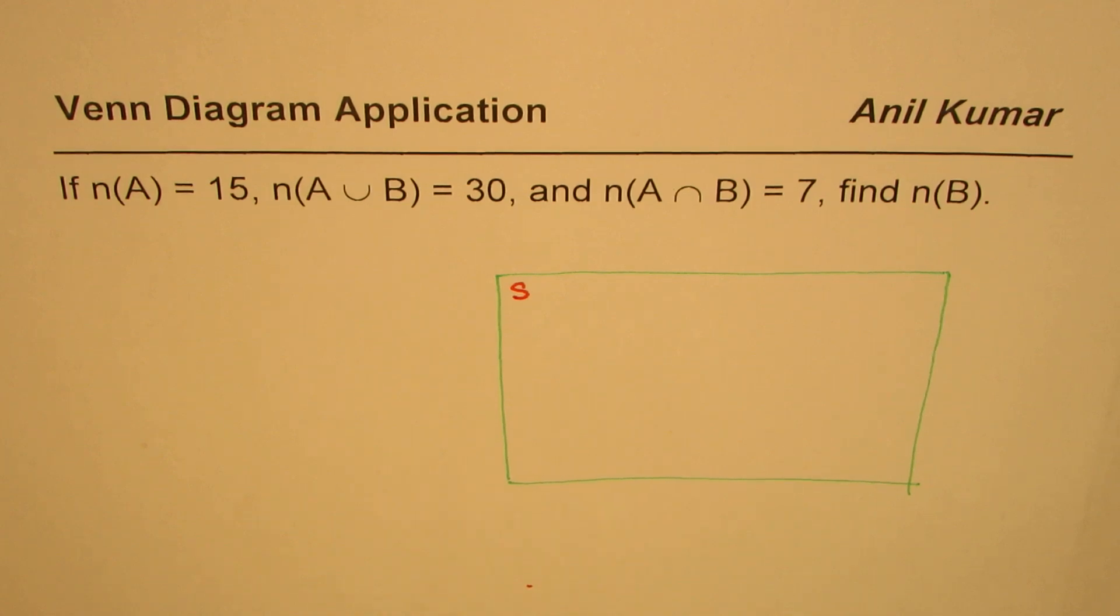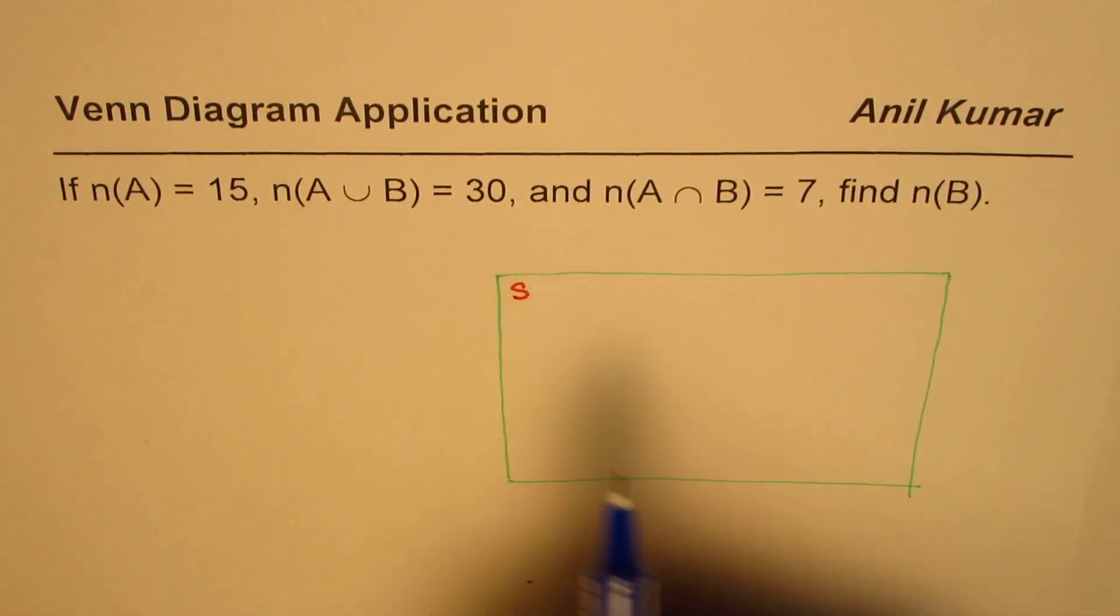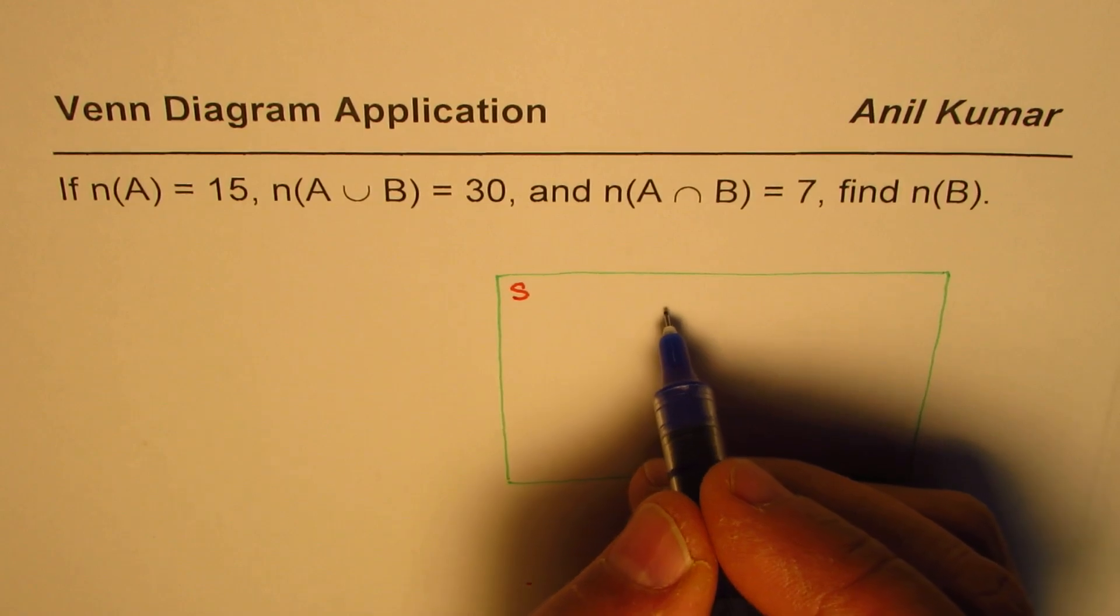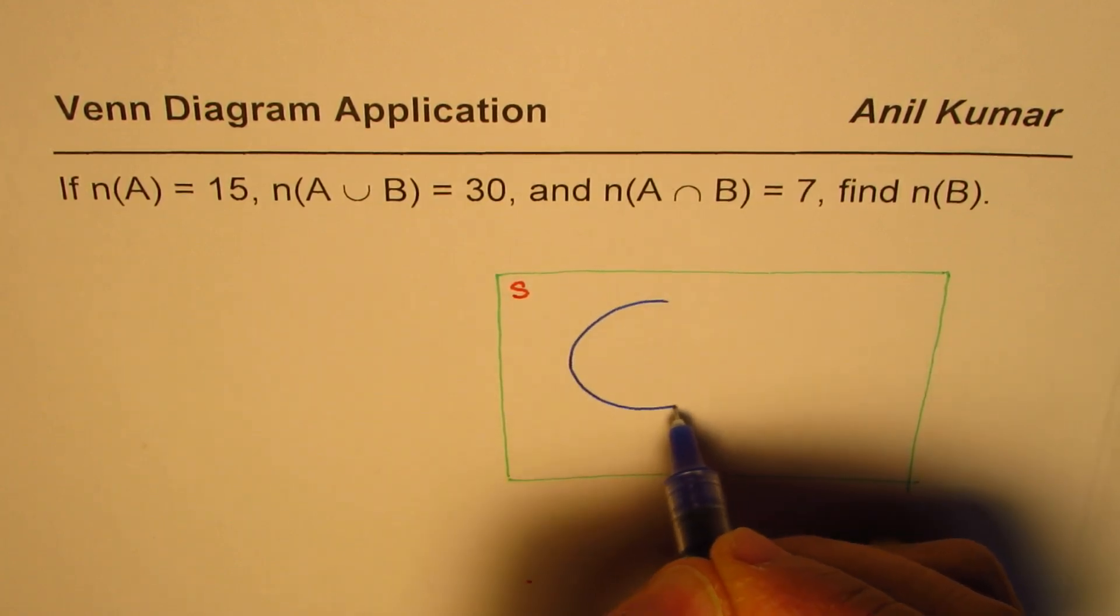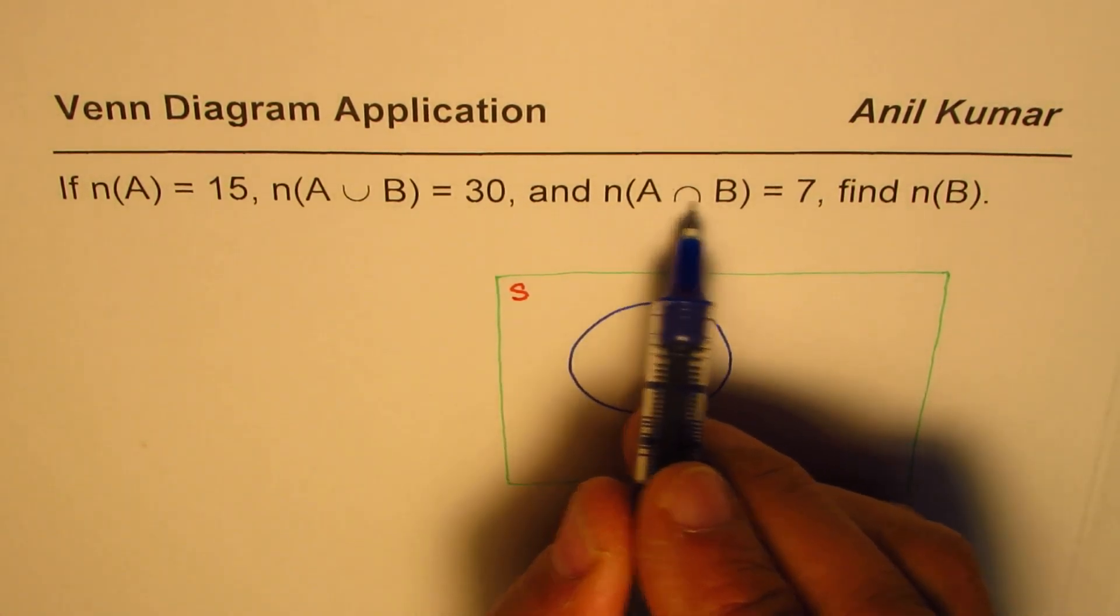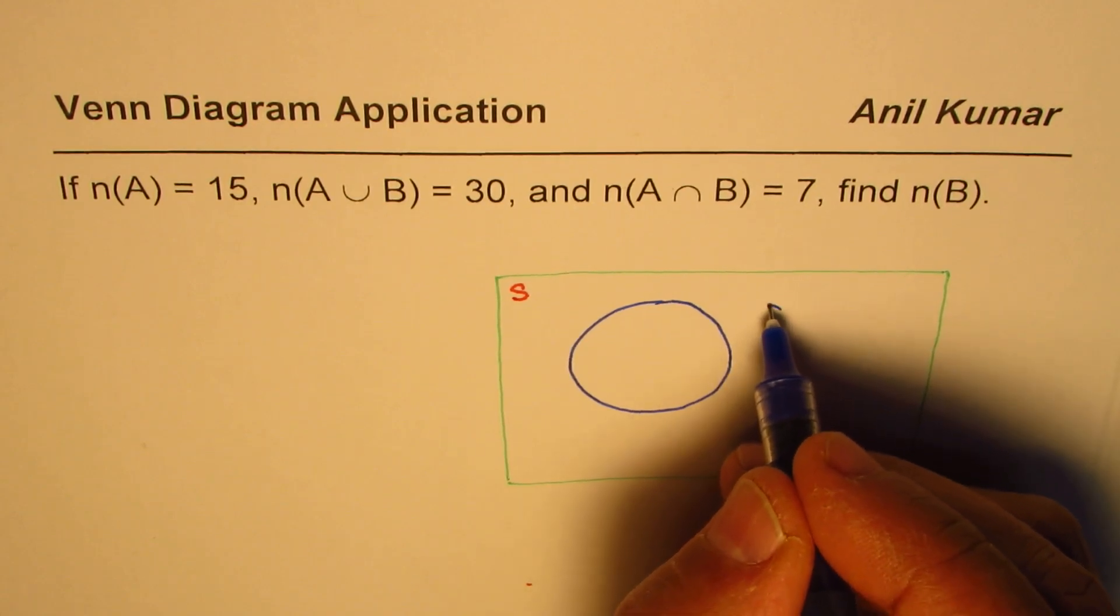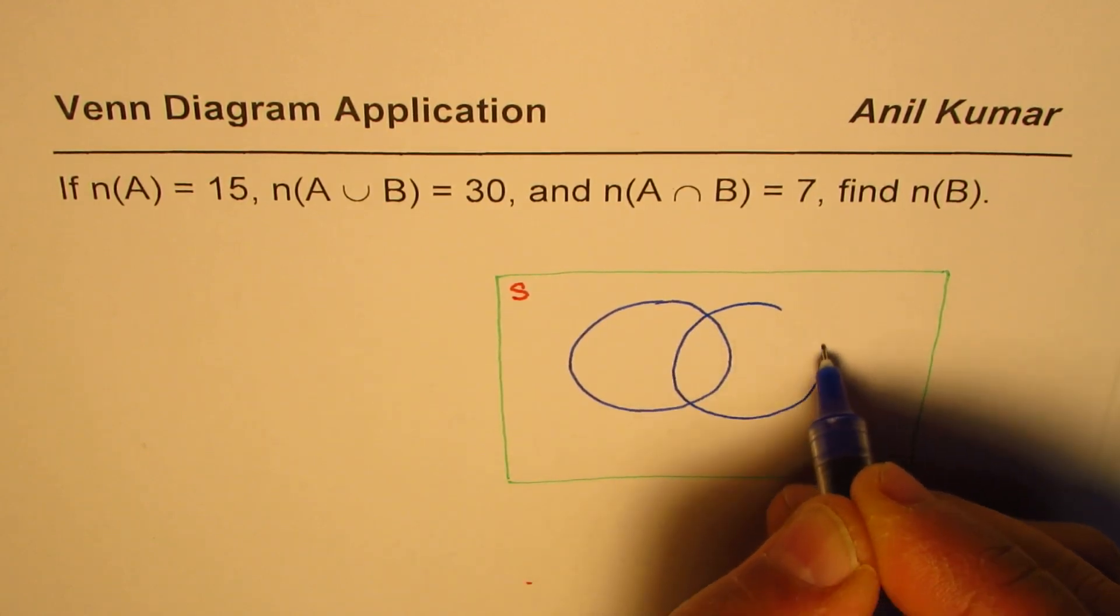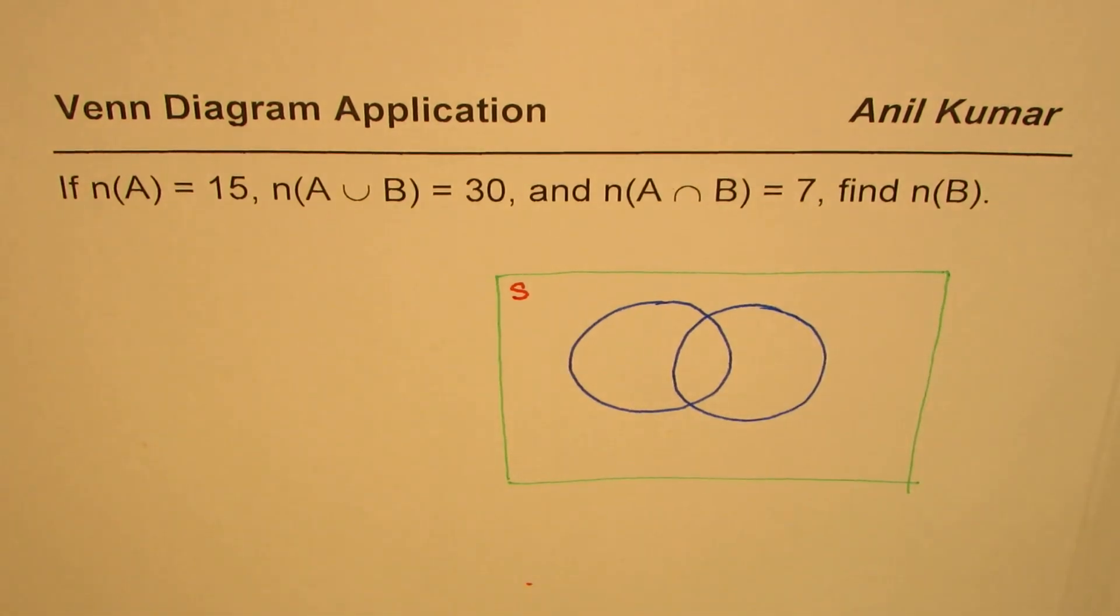Here we have A and B. These are two events, that could be represented by two circles. Since we do have intersection elements, this is not a disjoint function. They have intersection.